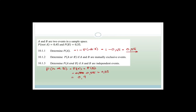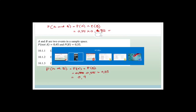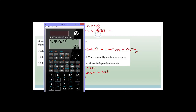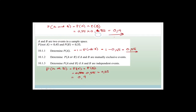Now determine the probability of A and B if A and B are independent events. The rule says P(A and B) = P(A) × P(B) if they are independent. So it's 0.55 × 0.35 = 0.1925, rounded to two decimal places that's 0.19.